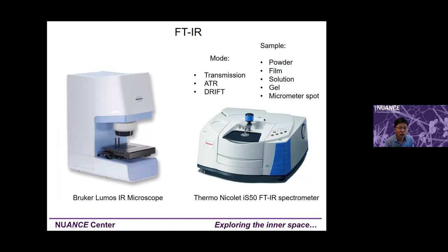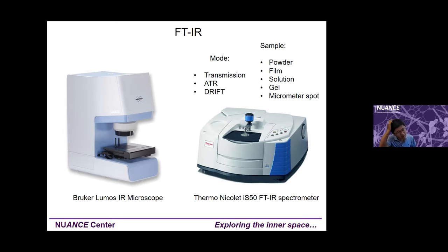Next is FTIR. In our lab we have two FTIRs. The right one is a regular FTIR for basic samples like powder, film, solution, and gel. For micro-spot work — for example if you have a sample with a small area that is different and you want to identify it — we have the left one, the Micro-FTIR, also called micro-FTIR. We can image that area and collect IR from there. Both instruments have ATR mode, which is almost sample-preparation-free. The ATR crystal on the left one is integrated — you just click a button and it comes out.